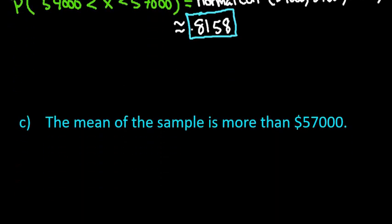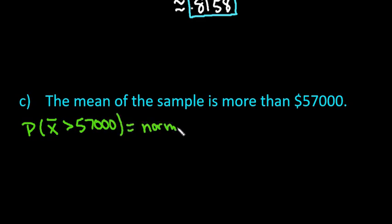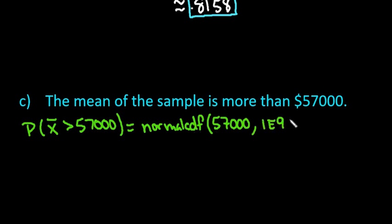The last scenario is the mean of the sample is more than $57,000, so we're looking for the probability that x-bar is greater than 57,000. For normal CDF, the lower limit is 57,000 and we go to positive infinity, so the upper is 1E99. Then enter the mean of 55,275 and 7,000 divided by the square root of 40.